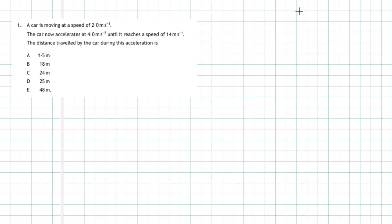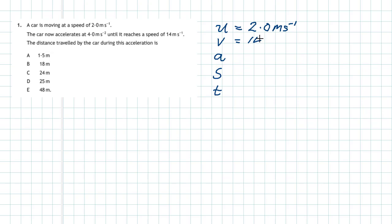It's a kinematics problem and you have to be highly organized. The first step is to put down the main variables of kinematics: u, v, a, s, and t. U is the initial velocity — in this case 2 meters per second. The final velocity v is 14 meters per second. The acceleration a is 4 meters per second every second, and you have to find the displacement s.